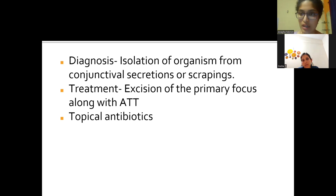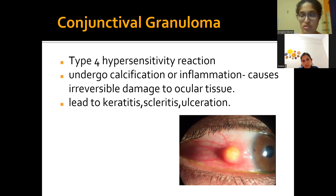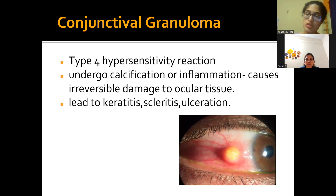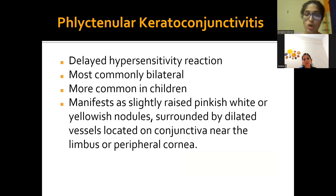Conjunctival granuloma presents with pain, redness, and watering; biopsy is required for diagnosis. A problem is that the granuloma can undergo calcification and cause damage to underlying ocular tissue; adjacent spread can cause keratitis — corneal inflammation — scleritis, and ulceration.